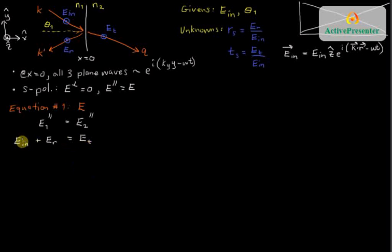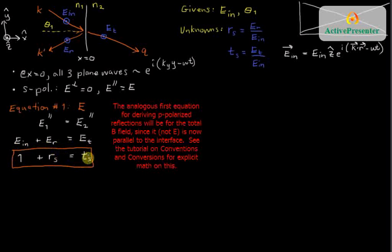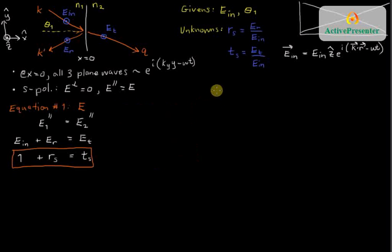If I just divide all three of these terms by E incident, I will get E incident divided by E incident, which, of course, is just one. I get the reflection coefficient for S polarized light here, and I get the transmission coefficient for S polarized light there. So, here is the first equation I need. I'm trying to solve for these two unknowns, and I've got one equation for it. What's my second equation?